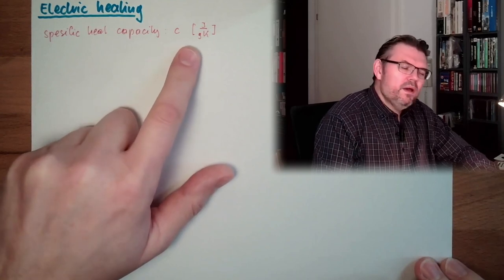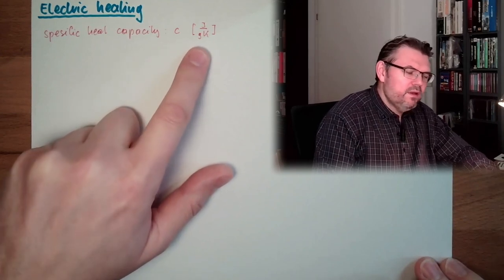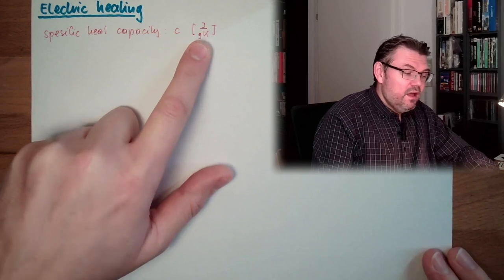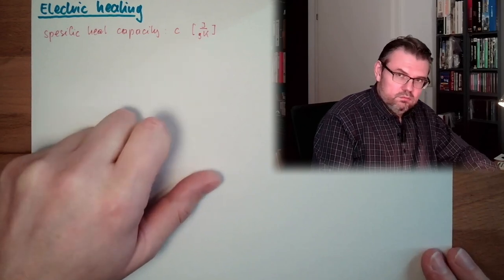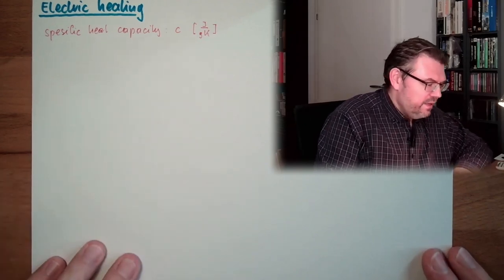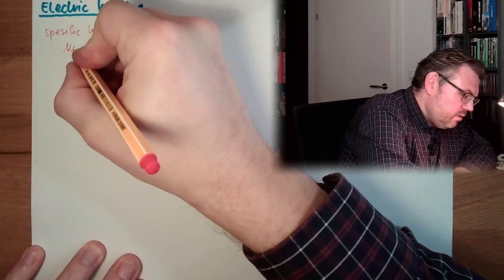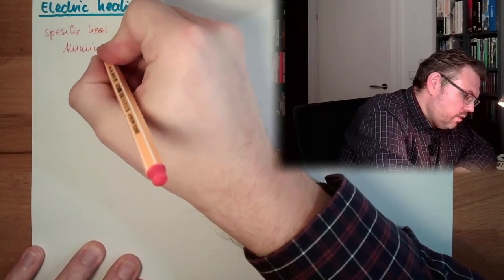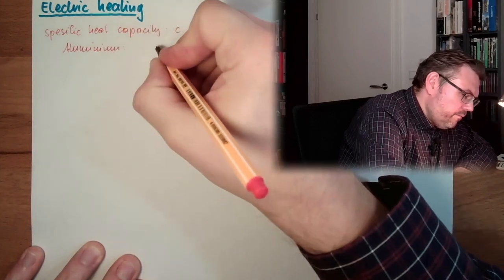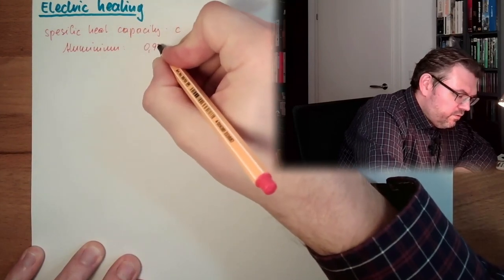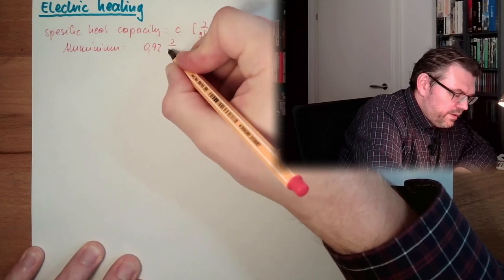So, if I want to heat up a certain material by one kelvin, one gram of a certain material, I need that amount of Joule. Let's have a look. What are typical values? Aluminium. We have 0.92 Joule by gram and kelvin.